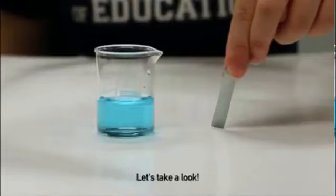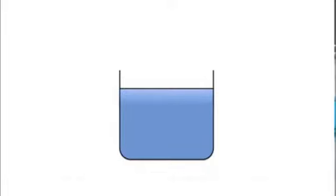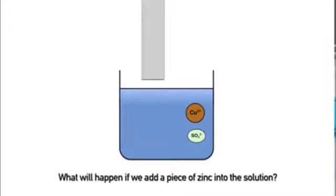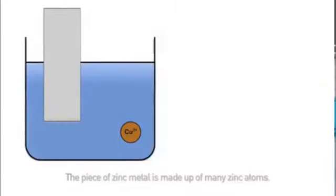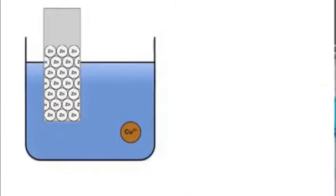What is the chemistry behind this? Let's take a look. This beaker is full of copper sulphate solution. The solution is blue due to the presence of copper ions. What will happen if we add a piece of zinc into the solution? Now here there are two metals: